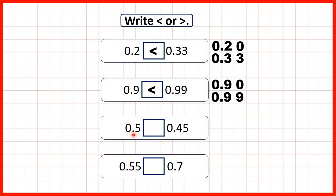Now we have 0.5 and 0.45. Again we write the numbers out with the decimal points lined up and we need to write a 0 in the empty square. Both numbers have 0 ones, but if we look at the tenths we have 5 and 4, so we know straight away that the number with 5 tenths must be larger — so that's 0.5.